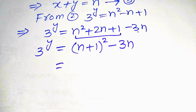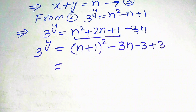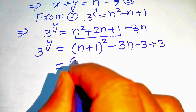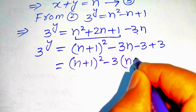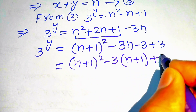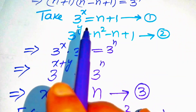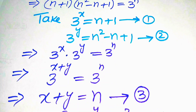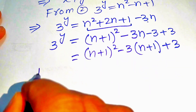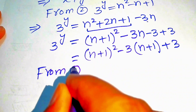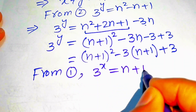We add and subtract 3 on the right-hand side, then factor out minus 3 to get n plus 1 whole squared minus 3 times n plus 1 plus 3. From equation 1 we have 3 to the power of x equals n plus 1, so we substitute that here.